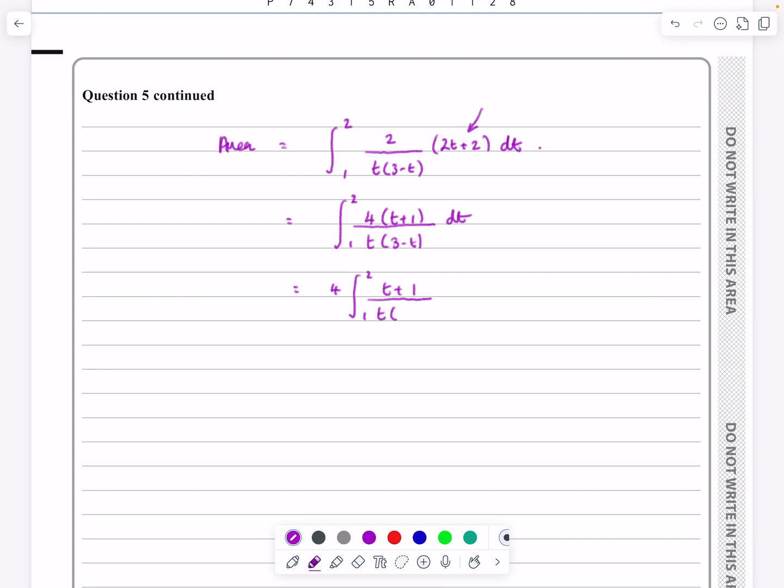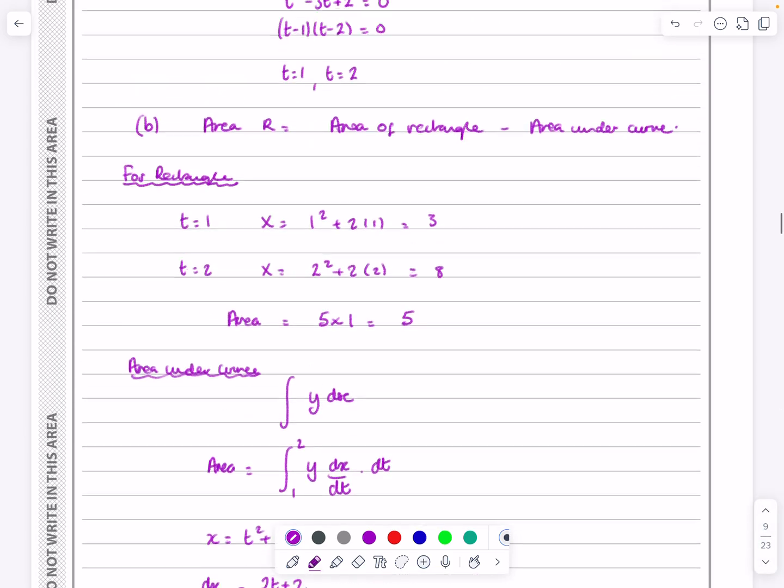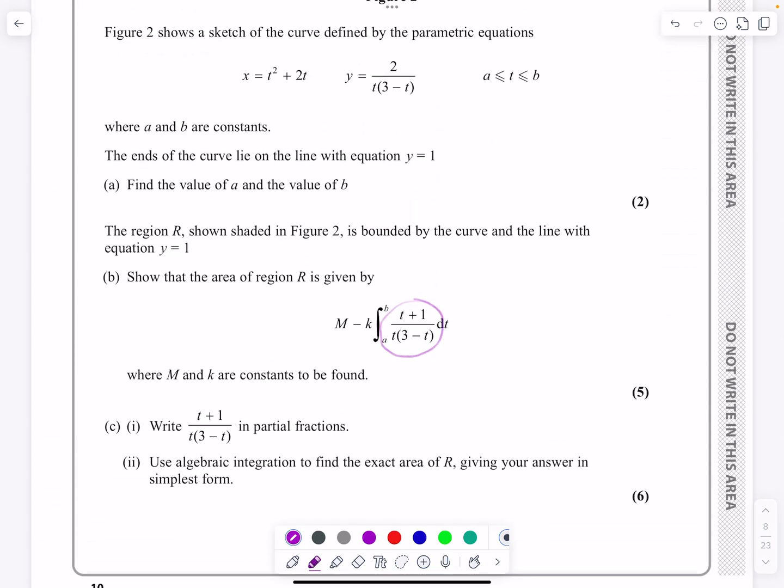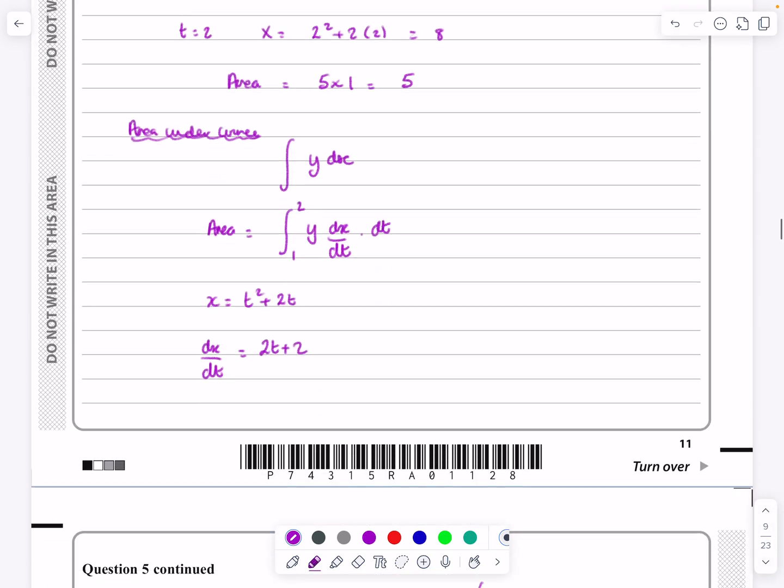And so the actual area of R that we were looking for, so area R is 5 minus the integral of that, and that now is in the correct format we've got there with M being 5 and K being 4 in that setup. So part C1 there, so it says, can we break T plus 1 over T times 3 minus T into partial fractions? Yeah, I can do that. A nice, easy, quick bit of partial fractions here.